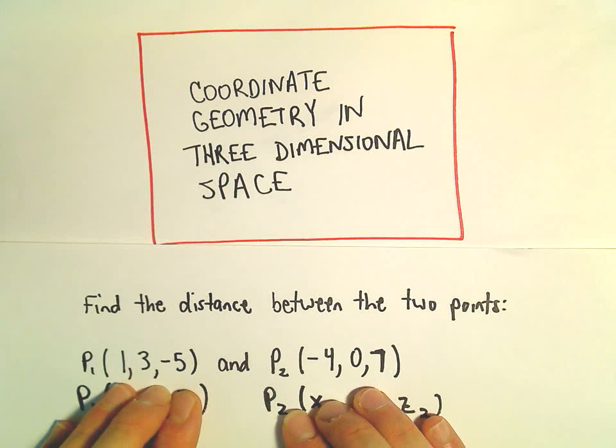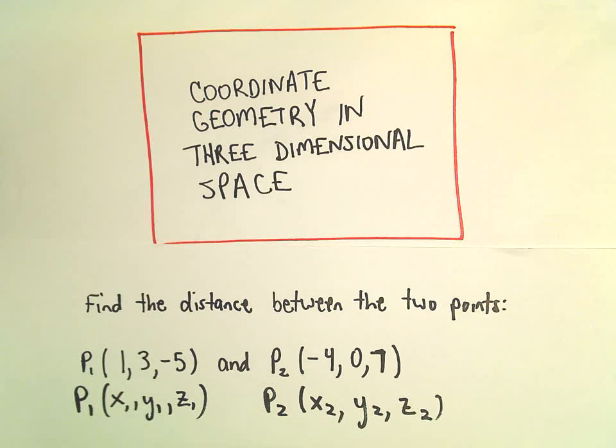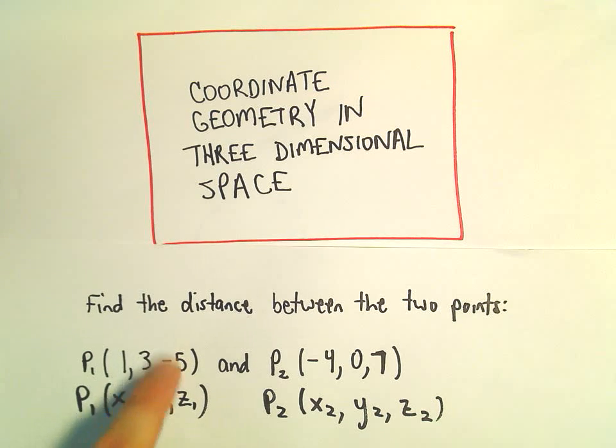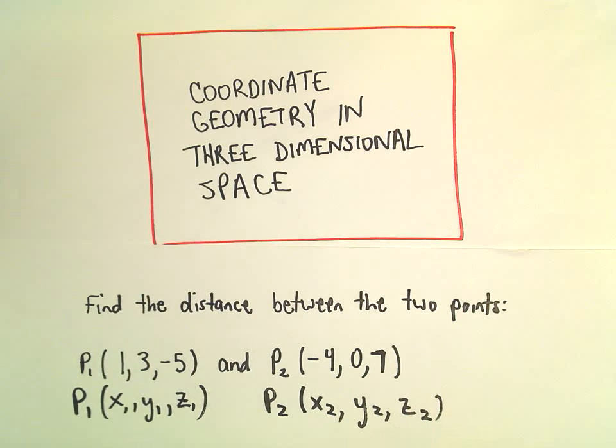So we've got the point 1, 3, negative 5, and then negative 4, 0, 7. If we label these as x sub 1, y sub 1, z sub 1, x sub 2, y sub 2, and z sub 2,